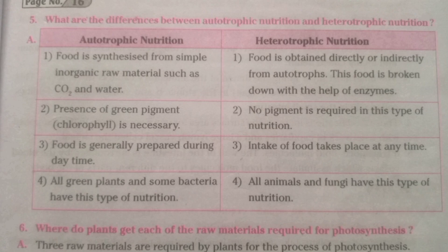In heterotrophic nutrition: food is obtained directly or indirectly from autotrophs, and this food is broken down with the help of enzymes; no pigment is required; intake of food takes place at any time; and all animals and fungi have this type of nutrition.